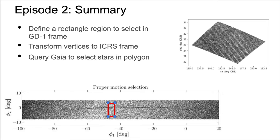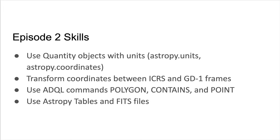The rectangle that we define in the GD1 reference frame around some stars in the GD1 stream is shown here in red. We then convert the vertices to a polygon in the ICRS frame and select stars inside this region from the Gaia catalog. The selected stars in the ICRS frame are shown in the upper right figure. In episode 2, learners will be introduced to AstroPy quantity objects with units, and will use both the AstroPy units module and coordinates module. They will also use AstroPy reference frames to transform coordinates between the GD1 and ICRS reference frames. This episode also teaches the ADQL commands POLYGON, CONTAINS, and POINT, and how to write an AstroPy table to a FITS file.